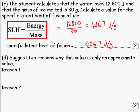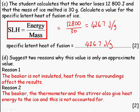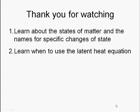State two reasons why this value is only an approximate value. The beaker is not insulated, so heat from the surroundings affects the results. The beaker, thermometer, and stirrer also give heat energy to the ice, and this is not accounted for.